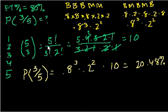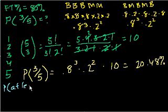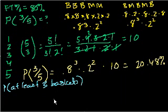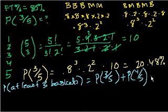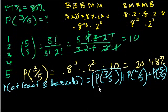Now let's find the probability of getting at least 3 baskets, which is what people are more likely to ask about. This equals the probability of getting exactly 3 out of 5 plus the probability of getting exactly 4 out of 5 plus the probability of getting exactly 5 out of 5. We already know the first one is 20.48%.